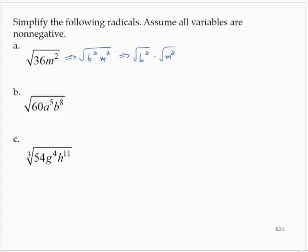And then using our rule — using what we know — the square root of 6 squared is 6, and the square root of m squared is m, so the answer is 6m.